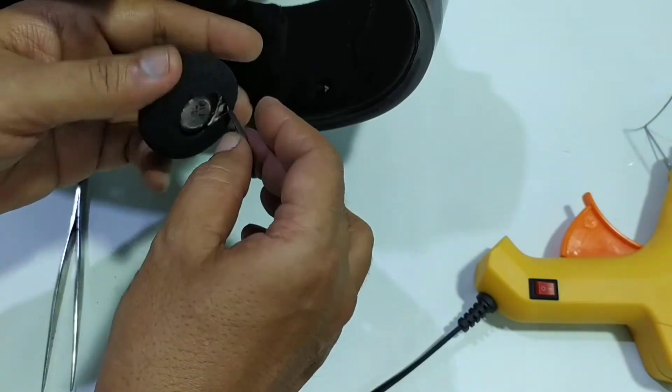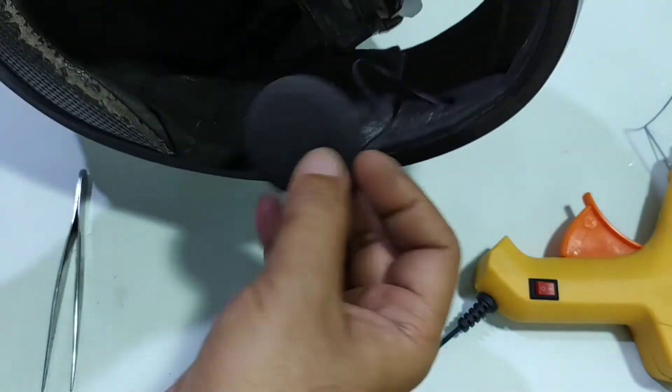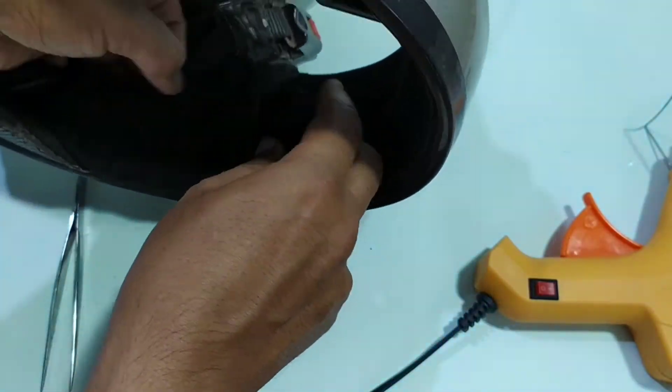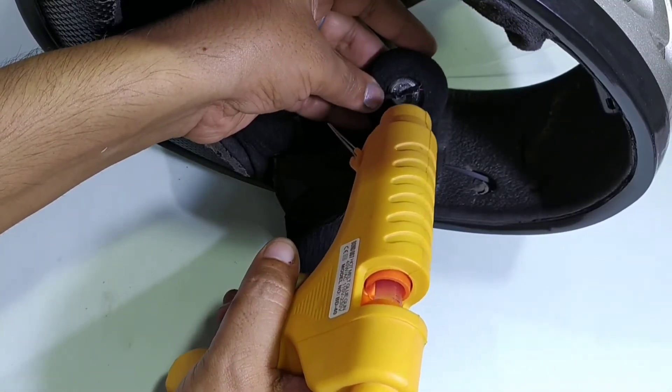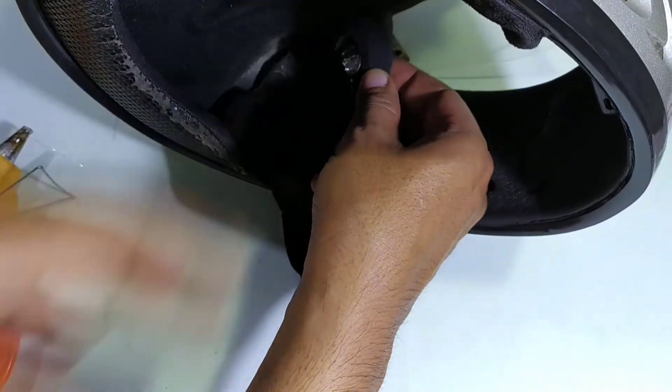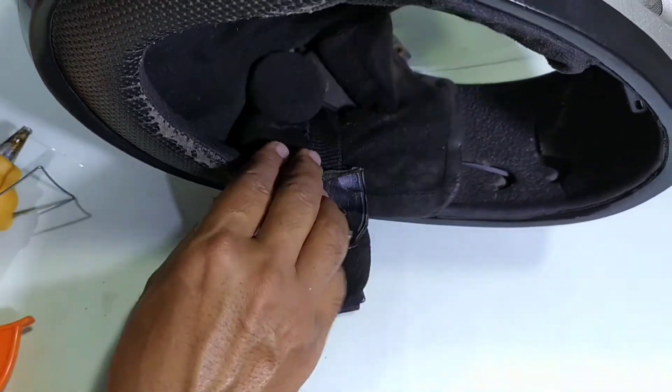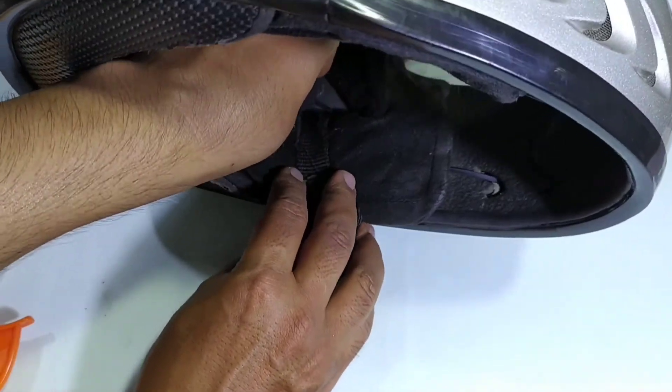Using the glue gun, we'll properly fix this on the other side. After installing everything, we'll check how it's working.